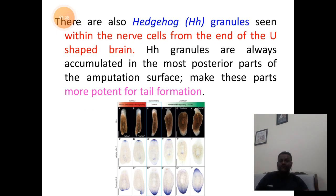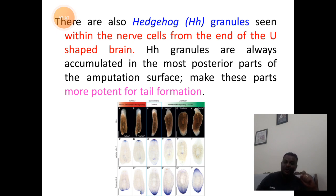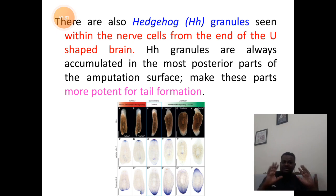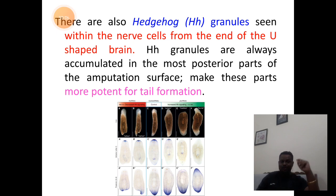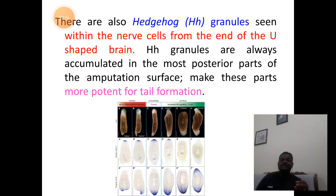There are also special hedgehog genes or proteins in the nerve cells of the brain. These proteins accumulate at the posterior side of the cut-end part, inducing tail formation along with WNT and beta-catenin genes. We are just naming the major genes, but remember there are around 6,000 genes. Polarity of regeneration is dependent on the activity of the neoblasts and the corresponding genes at the location.